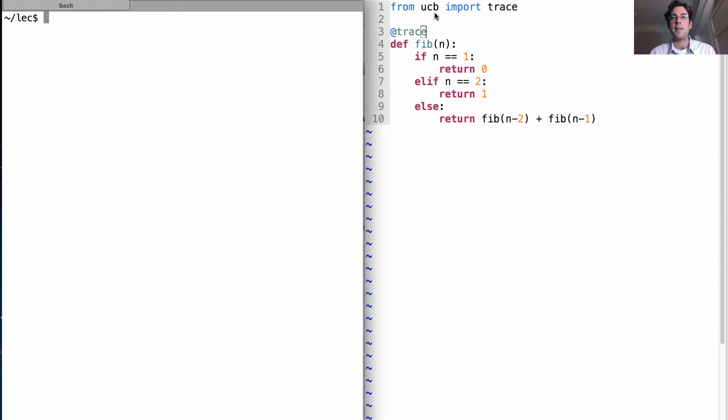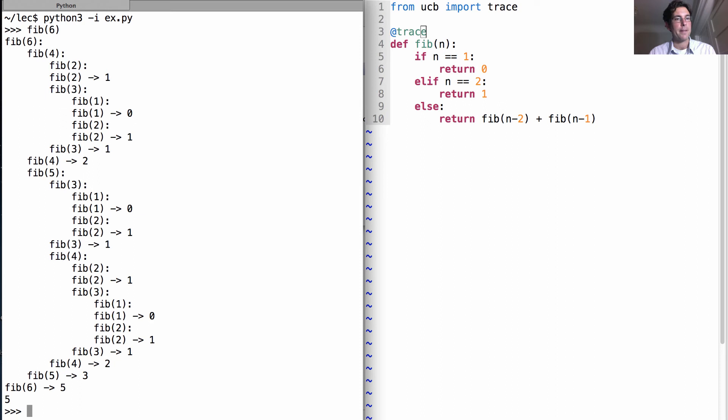So this is the same UCB.py file that I gave you in your hog project. And now when I call fib(6), I'll see a trace of everything that happens.